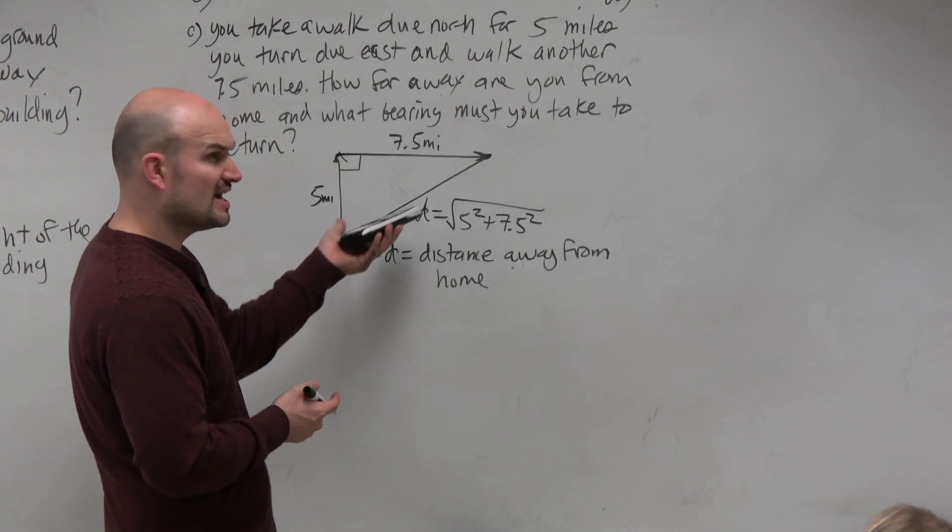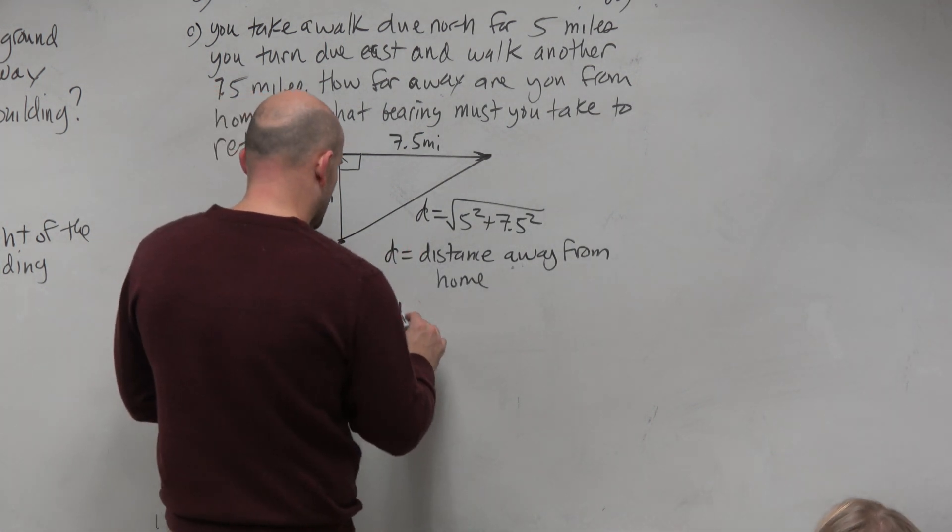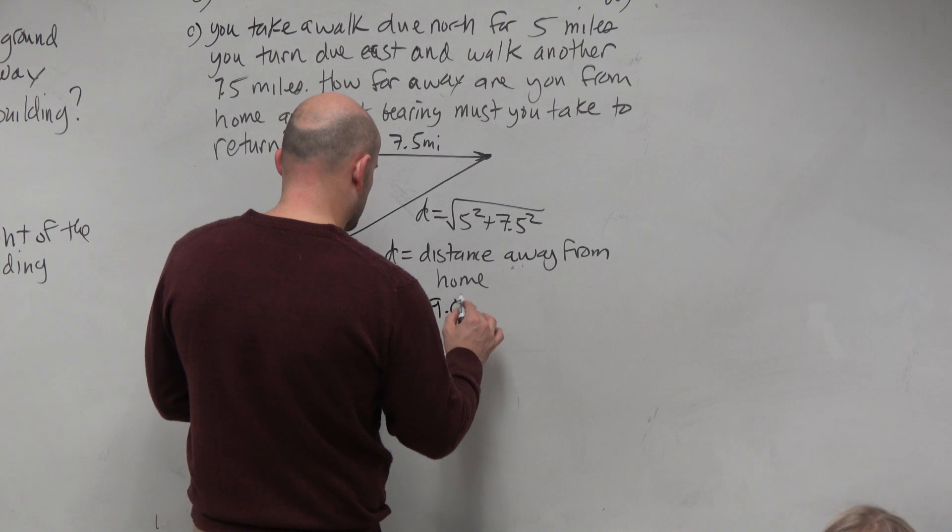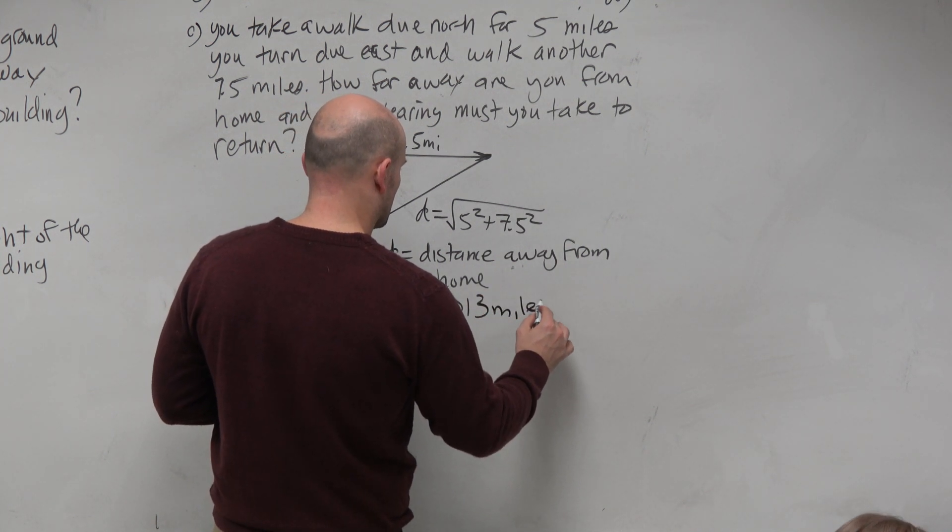And that makes sense, right? Per the problem, it's not 90 or something crazy, right? So D, I'm just going to use the truncated version, 9.013, and that's miles.